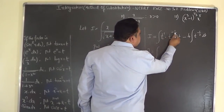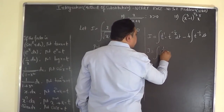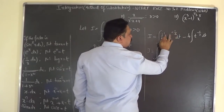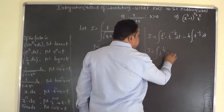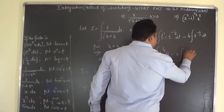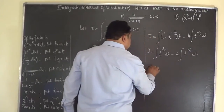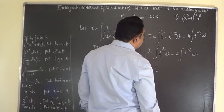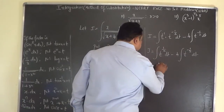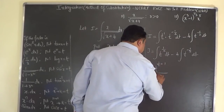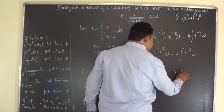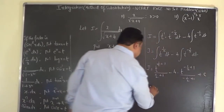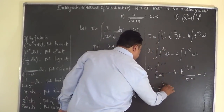So I equals integral of t to the power of half dt minus 4 times integral of t to the power of minus half dt. Using the power rule: I equals t to the power of (half plus 1) divided by (half plus 1) minus 4 times t to the power of (minus half plus 1) divided by (minus half plus 1) plus C. That is t to the power of 3/2 divided by 3/2, minus 4 times t to the power of half divided by half, plus C.